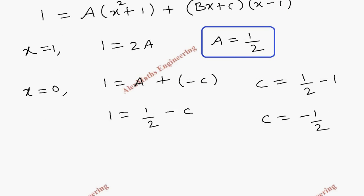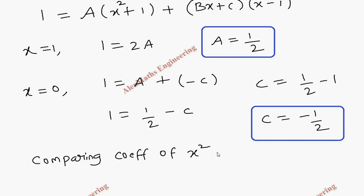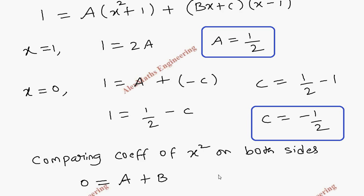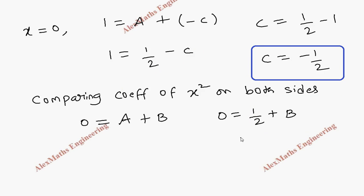We got the value of C. Now let's compare the coefficient of x squared on both sides. On the left-hand side there is no x squared term, so it is 0. On the right-hand side the coefficient of x squared from the first term is A, and from Bx times x is B. So 0 equals one half plus B, giving B equals minus one half.